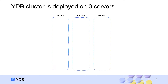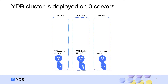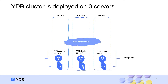We will deploy YDB on a cluster of three servers. Every machine has one device for the operating system and three storage devices for YDB. First we will launch static nodes — the YDB process that operates storage devices. Three static nodes will be launched, one per virtual machine. Static nodes join the cluster and use the network for intra-cluster communication.